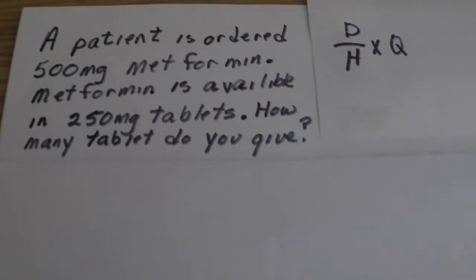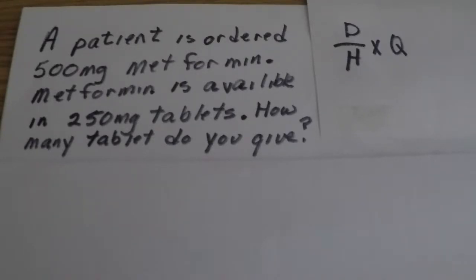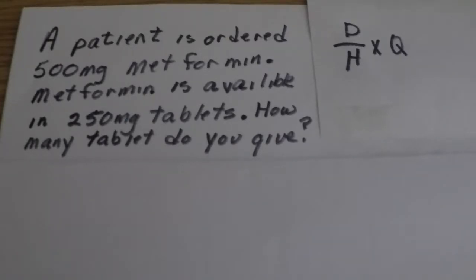I'd like to do a couple simple drug calculations with you to get you started in this chapter. We're going to use the formula method: desired over have times quantity. In your Workman text, it doesn't show quantity for pills because our quantity is usually just one tablet. But I like to always plug that in to keep me on track of what kind of unit I'm working with.